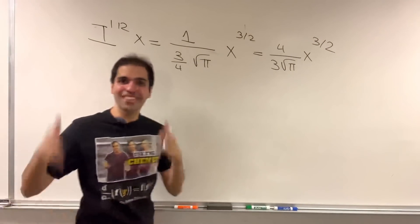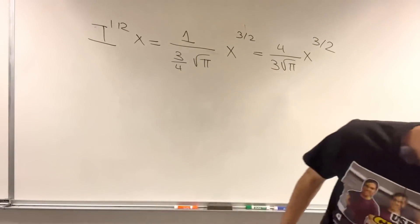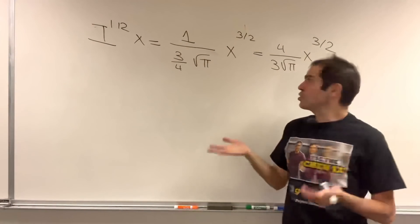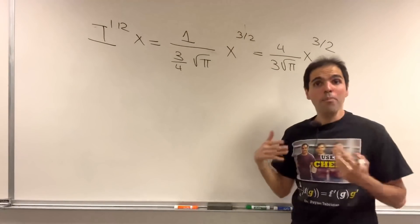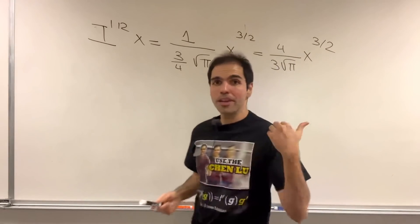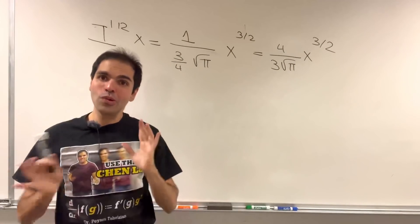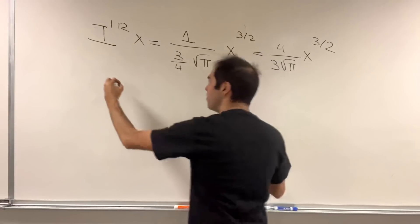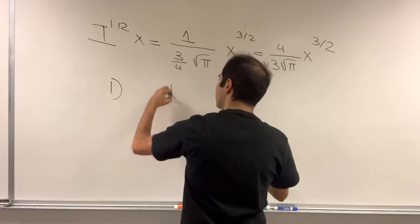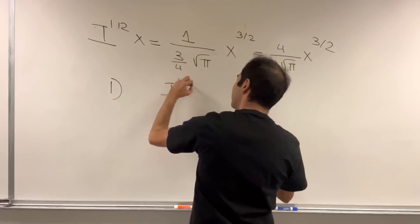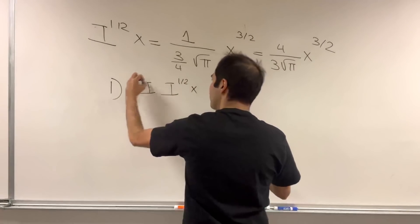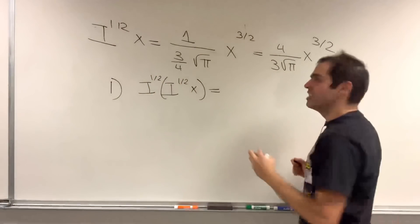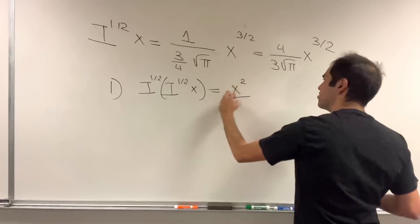And, last but not least, I just wanted to tell you a couple of nice properties. Because, the half integral really behaves the way we want it to behave. And, what I mean by that is, for instance, if you half integrate the half integral of x, then you do get the integral of x, which is x squared over 2.